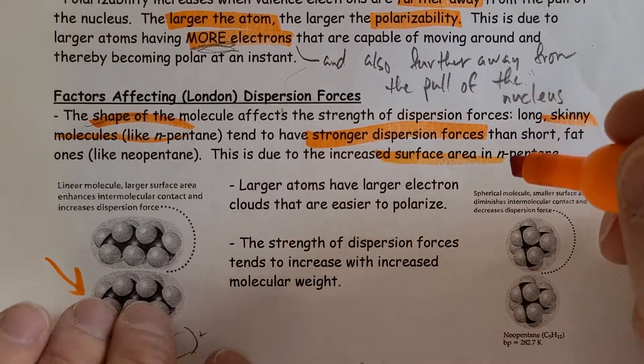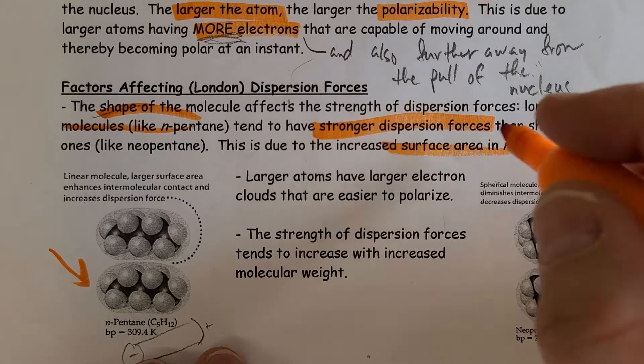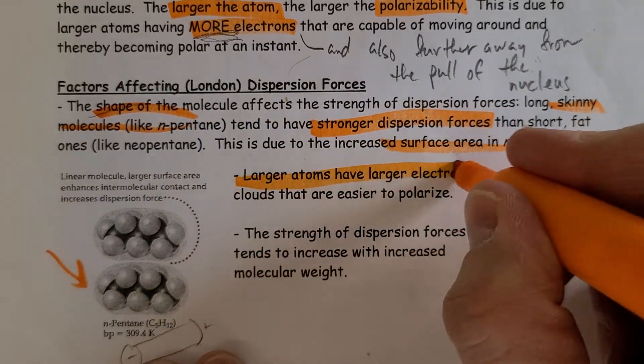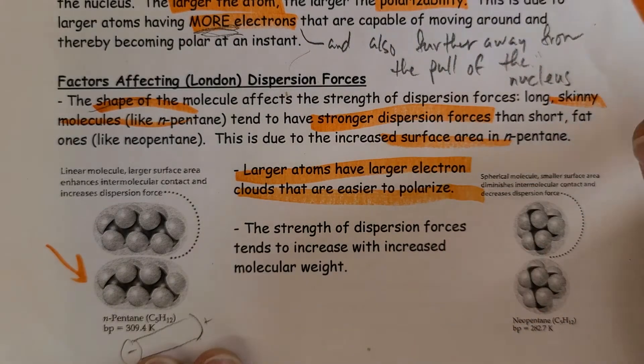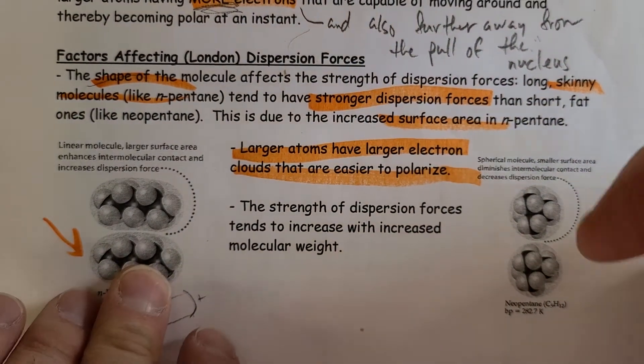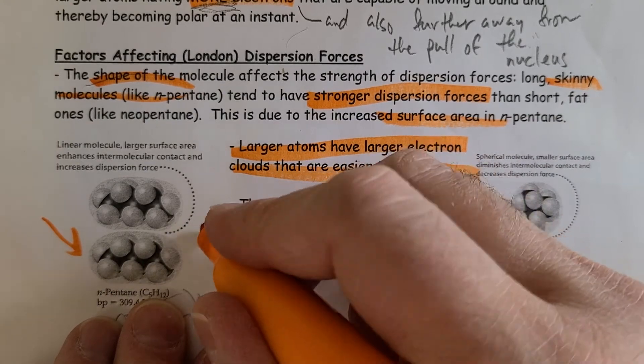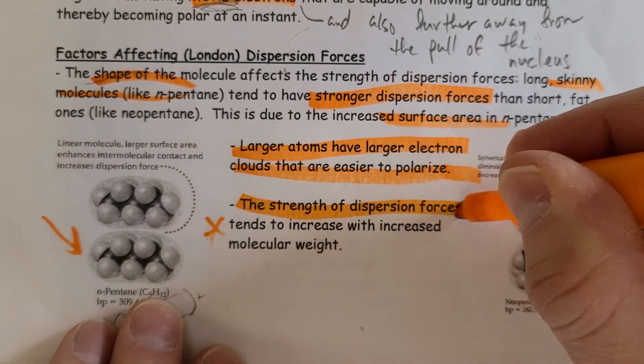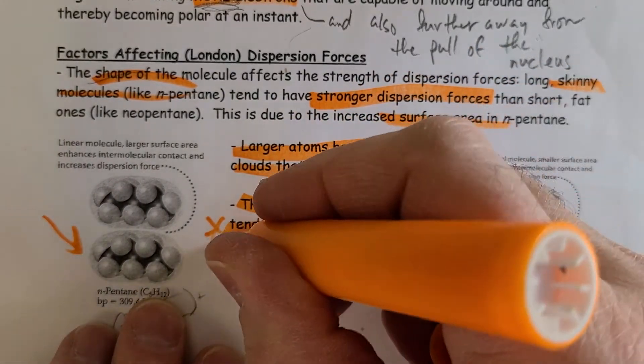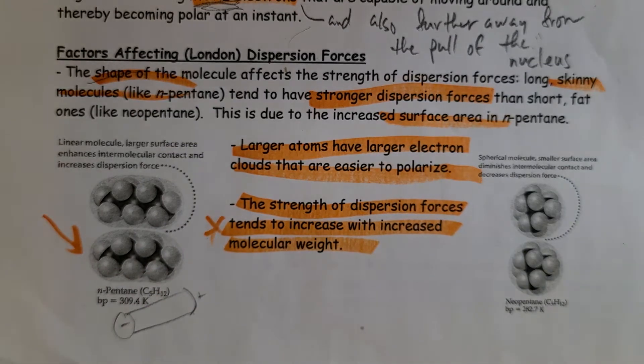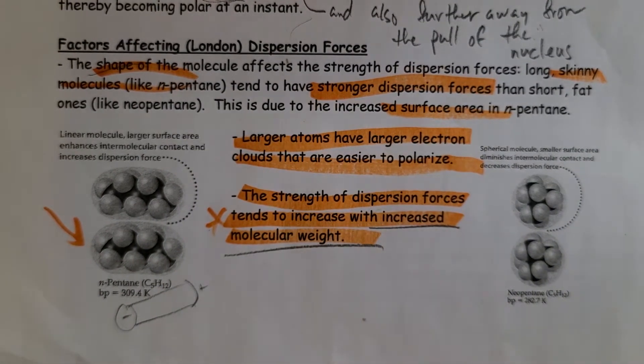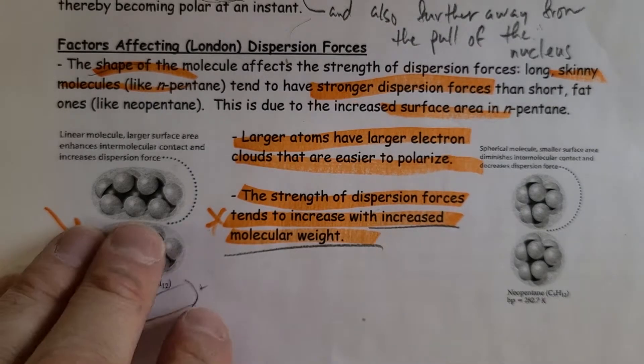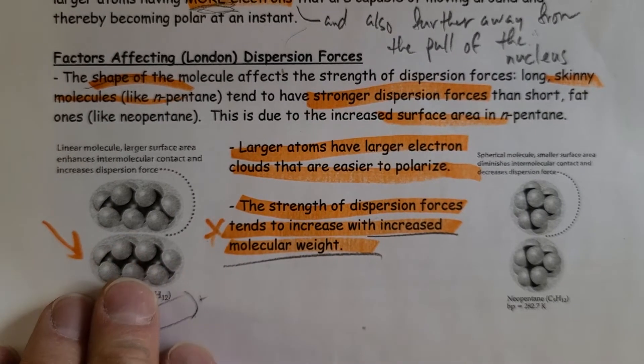We also have increased surface area with that. And as mentioned, larger atoms have larger electron clouds that are easier to polarize, and there's also more electrons there. So what that means is that the strength of dispersion forces tends to increase with increased molecular weight or mass. The larger the molecules are, the more easily polarizable it is.